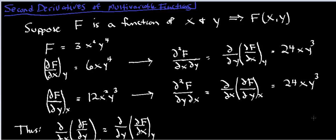Now, these second derivatives of multivariable functions — what multivariable functions are we dealing with? In general, we're going to be dealing with functions of two variables. We've dealt with internal energy, which is a function of volume and temperature. We've dealt with enthalpy, which is a function of pressure and temperature. We've also dealt with entropy, which can either be written as a function of pressure and temperature or volume and temperature. We're ultimately going to deal with Gibbs free energy and Helmholtz free energy. Every one of these state functions can be written in terms of being dependent on two variables.